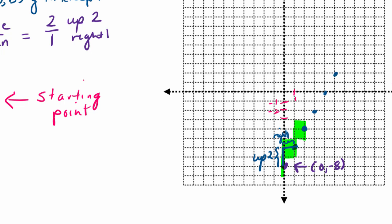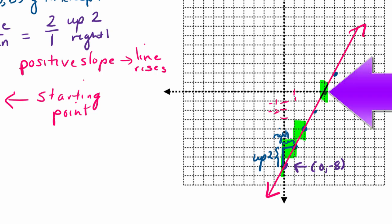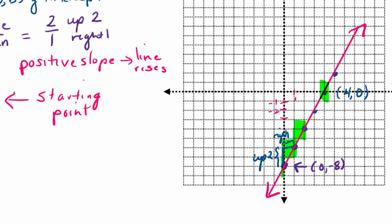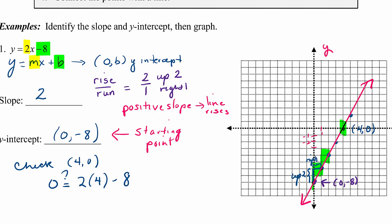Did we expect that line to be a rising line? Yes, because a positive slope means the line rises. These are little checks to make sure you're on the right track. Now let's connect those points with a line. A good way to check is to pick one of the ordered pairs you landed on and substitute it back into the equation. For example, I see the x-intercept at (4, 0). Substituting: 0 equals 2 times 4 minus 8 — yes, that checks. The more you practice this skill, the better you get at it.